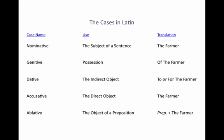Now all of these uses are broken down into cases. A case is just another way of naming how the noun is used in the sentence. We have the nominative case, used when the farmer is the subject. The genitive case is used for possession — there's no apostrophe-s in Latin, so 'the farmer's house' becomes 'the house of the farmer.' The dative case is used when the farmer is the indirect object. The accusative case is when the farmer is the direct object. And the ablative case is when the farmer is the object of a preposition. An easy way to remember their order is that they go in reverse alphabetical order from ablative all the way back up to nominative.